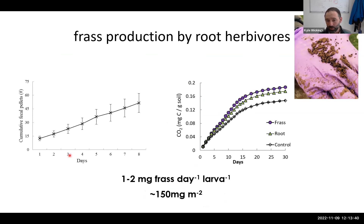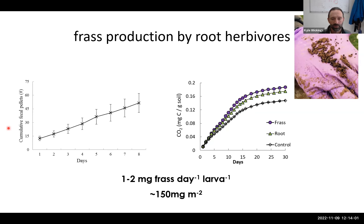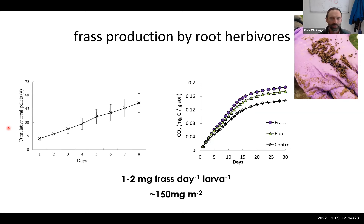On average per day, one scarab larva — in this case the European chafer — produces one to two milligrams of frass. That doesn't seem like a lot, but when you factor in the time these organisms are feeding and their densities in soil, it adds up — around 150 milligrams per day per square meter of soil. So Hui Zia did a short-term 30-day incubation giving soils different inputs: nothing, frass at equivalent amounts from the root herbivore, or just the same weight of roots cut with scissors.